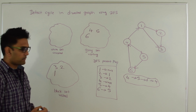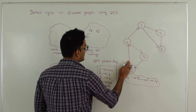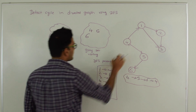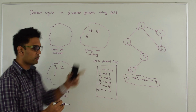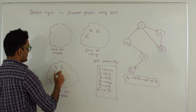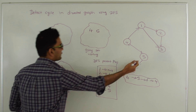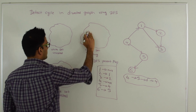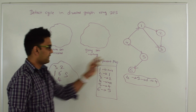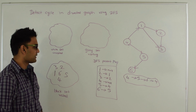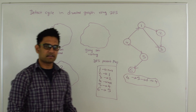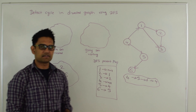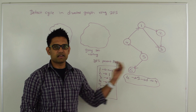Now suppose that we did not have this edge 6→4. In that case, 6 would have no more neighbors to explore, so we would move 6 to black set, then 5 would have no more neighbors, so we move 5 to black set, then 4 would have no more neighbors, so we move 4 to black set — and we would not find any cycle. So if edge 6→4 does not exist this graph returns false because there is no cycle, and if edge 6→4 exists then this graph has a cycle and it should return true.